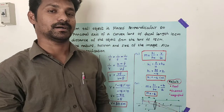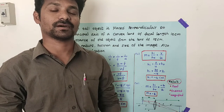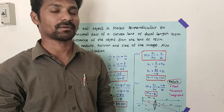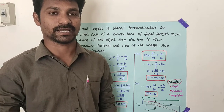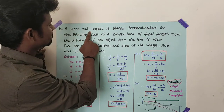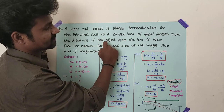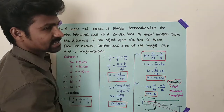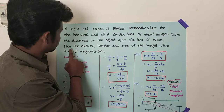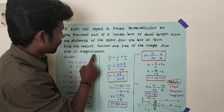Hello students, next problem from CBSE 10th standard physics, Light chapter, example question 10.4. This problem is related to a convex lens. A 2 centimeter tall object is placed perpendicular to the principal axis of a convex lens whose focal length is 10 centimeter. The distance of the object from the lens is 15 centimeter. Find the nature, position, and size of the image. Also find its magnification.